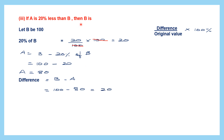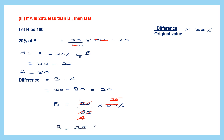Now we find the percentage by which B is more than A using the formula: difference divided by original value into 100%. The difference is 20, the original value is A = 80. So 20/80 × 100% = 25%. Therefore B is 25% more than A, which is option D.